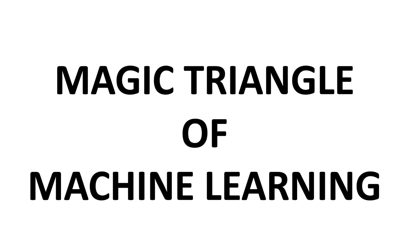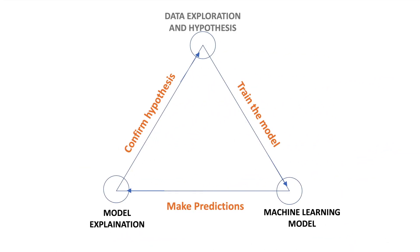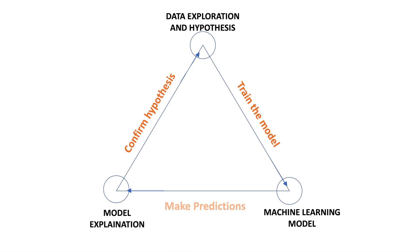let me introduce you to the magic triangle of machine learning which I will be using in this video. I will start with data exploration and hypothesis building. In this step you will see how to explore the data and develop a hypothesis on why the customers are churning. Next is the machine learning step, where we will build a model to make predictions if the customer will churn or not. In the last step, model explanation, I will demonstrate how to explain the machine learning model predictions.